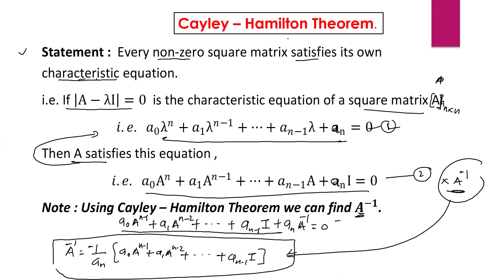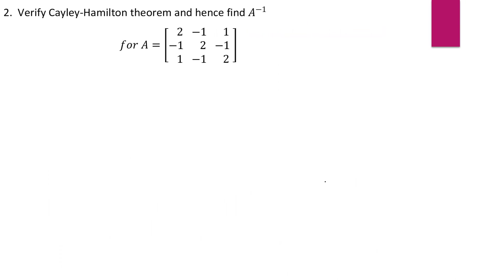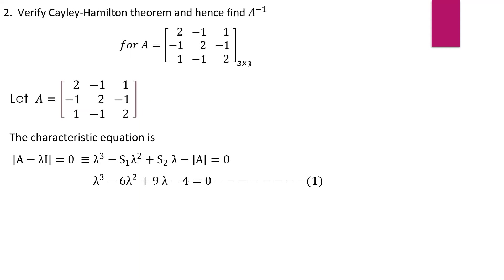Here we verify the Cayley-Hamilton theorem for a matrix of order 3×3. In the last lecture, we already discussed the Cayley-Hamilton theorem for a 2×2 order matrix. Now the question is: verify the Cayley-Hamilton theorem and hence find A inverse for the given matrix of order 3×3. First, we write the given matrix — let A be the given matrix. We consider the characteristic equation, and when we solve it we get a 3rd degree equation.